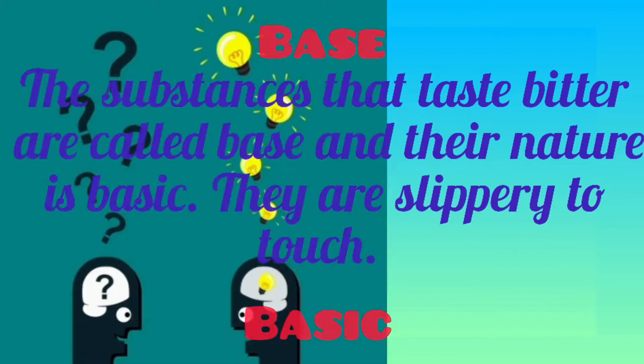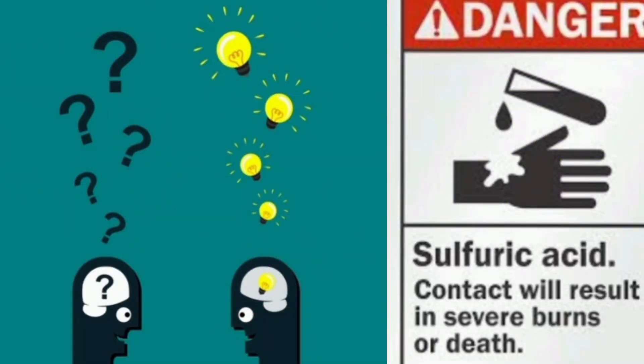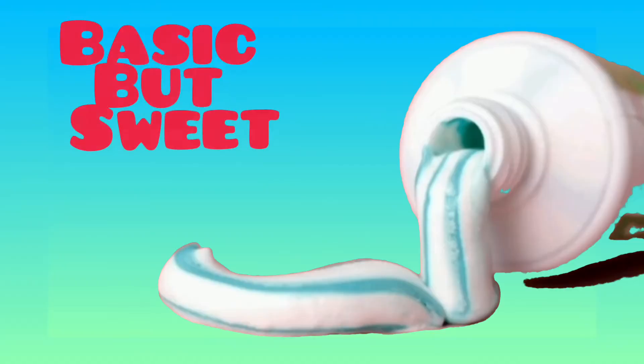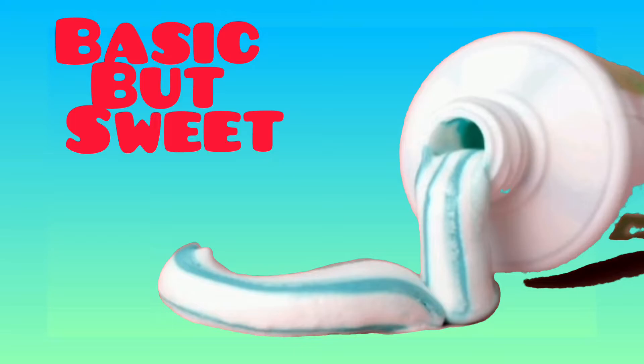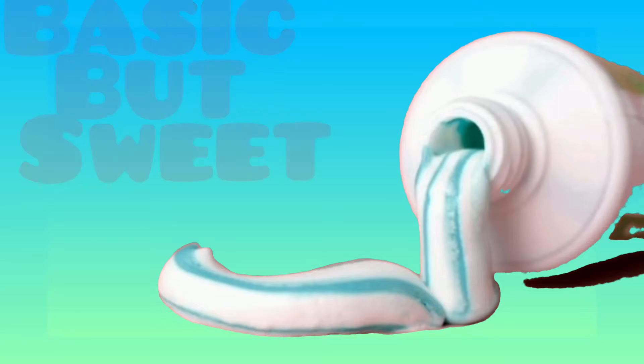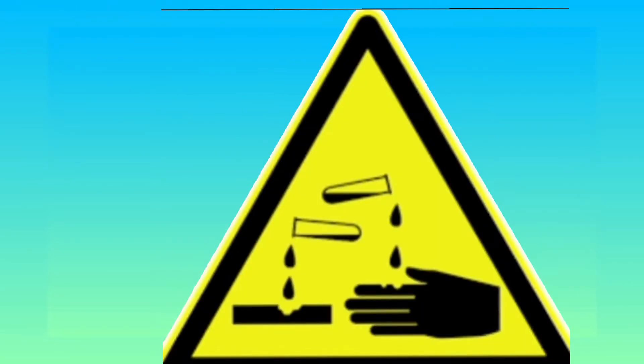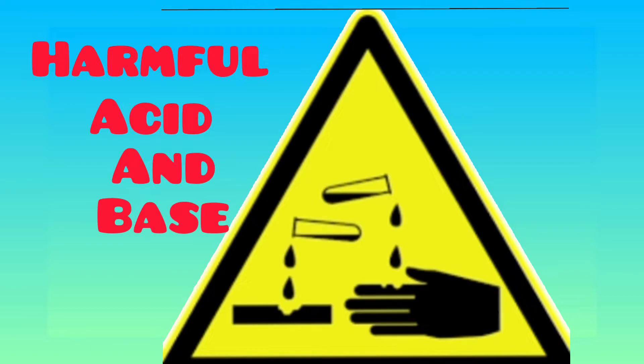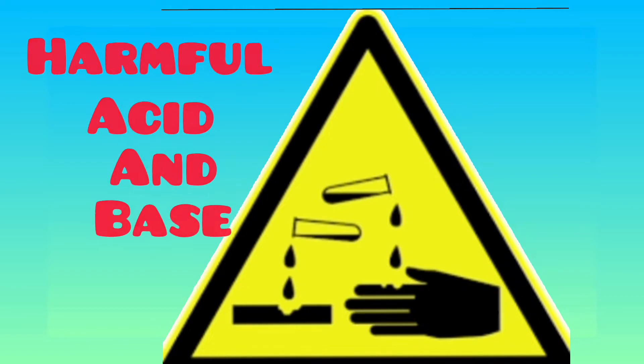But students, many times we cannot identify whether the nature of a substance is acidic or basic. For example, toothpaste is basic; however, it tastes sweet. Moreover, it could also be harmful to taste a substance. So if we cannot taste every substance, how do we find its nature?